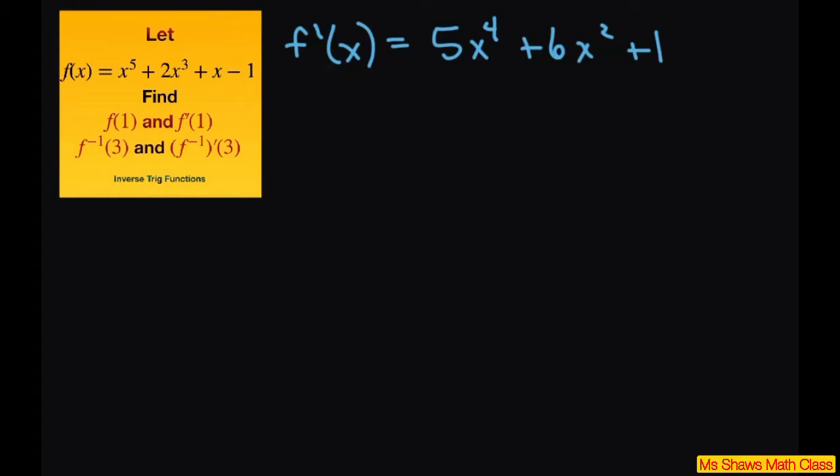So if you do f of 1 and I plug in 1 here, you get 1 to the 5th plus 2 plus 1 minus 1. This equals 3. So we have 1 comma 3 here.